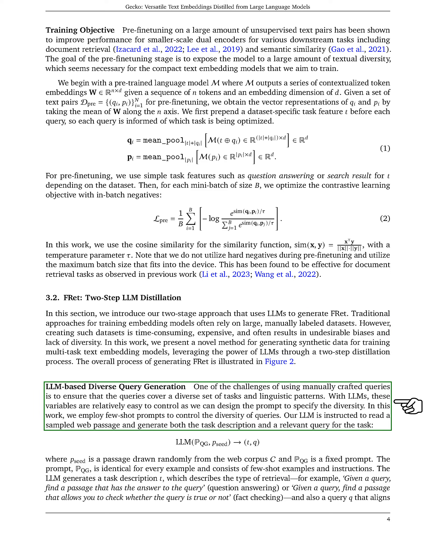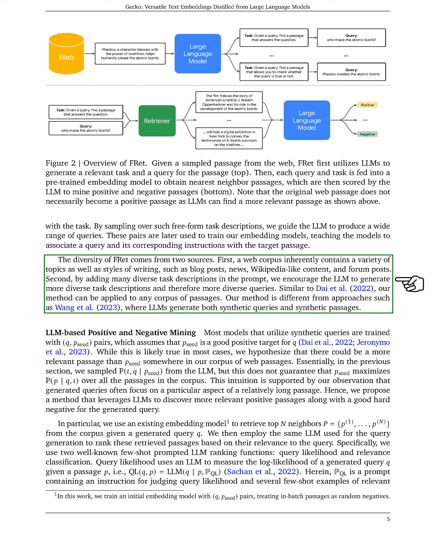By leveraging LLMs, we can control the diversity of queries easily. The LLM reads a web passage and generates task descriptions and relevant queries, ensuring a wide range of queries for training our embedding models. The diversity of FRET stems from the variety of topics in the web corpus and the inclusion of diverse task descriptions in the prompt. Our method differs from traditional approaches by focusing on generating diverse queries rather than both queries and passages.